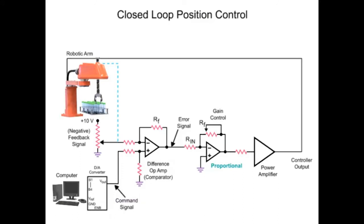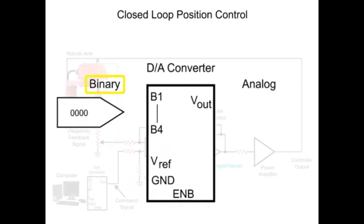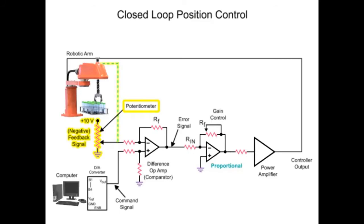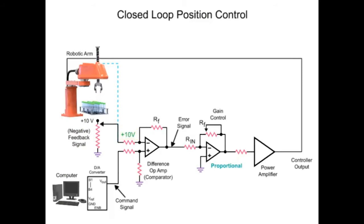The analog command signal voltage produced by the digital to analog converter determines the position of the arm. The potentiometer attached to the robotic arm in the circuit indicates the actual position. The variable voltage produced is referred to as the feedback signal. When the feedback signal voltage matches the command signal voltage, the arm has reached the desired position. For example, with the arm at the bottle pick position, the potentiometer output voltage of zero matches the command signal of zero from the computer.